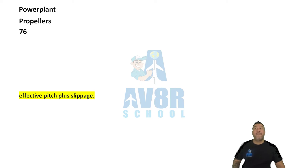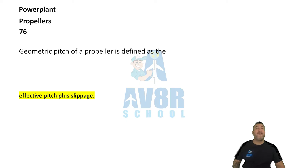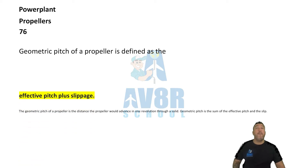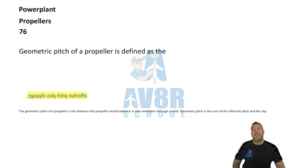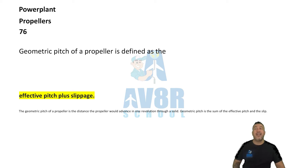Number 76: Geometric pitch of a propeller is defined as effective pitch plus slippage.